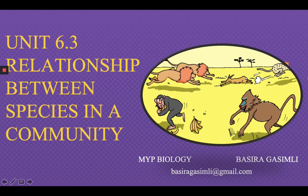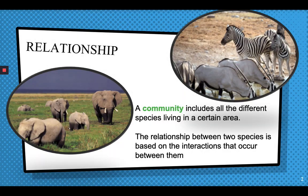Hello everyone, welcome to NYP Biology. Today our topic is going to be about the relationship between species in a community. A community includes all the different species living in a certain area. Living in the same habitat, different animals have to interact with each other, and these interactions are what we call relationships. There are different kinds of relationships that we're going to look at today in this lesson.